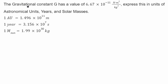In this problem, we have the gravitational constant G that has a value of 6.67 times 10 to the negative 11, and has units of newtons times meters squared over kilograms squared. We have to express this in units of astronomical units, years, and solar masses by converting these values.